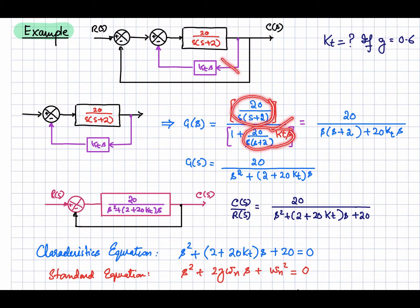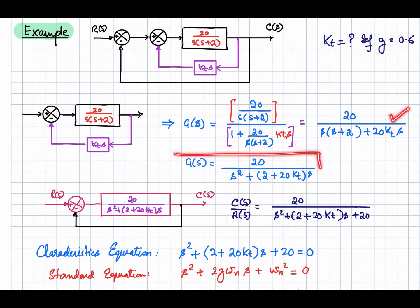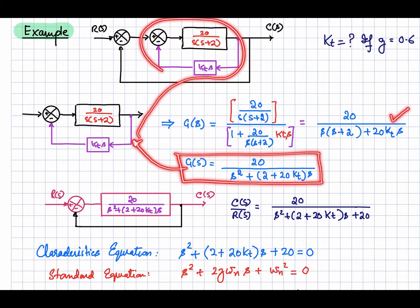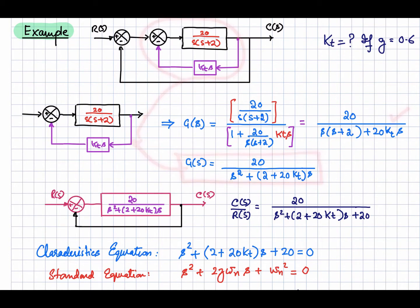Using this expression we can find out the closed loop transfer function between these two points. That is given by this expression, so this is the closed loop transfer function representing this inner loop, which is basically this part of the main block diagram.